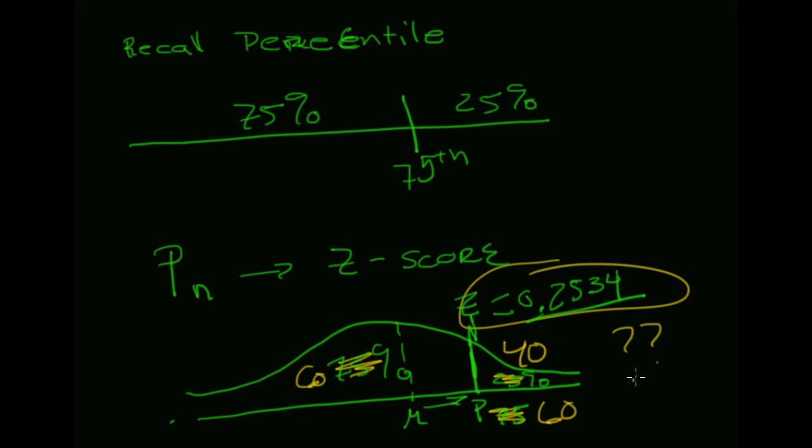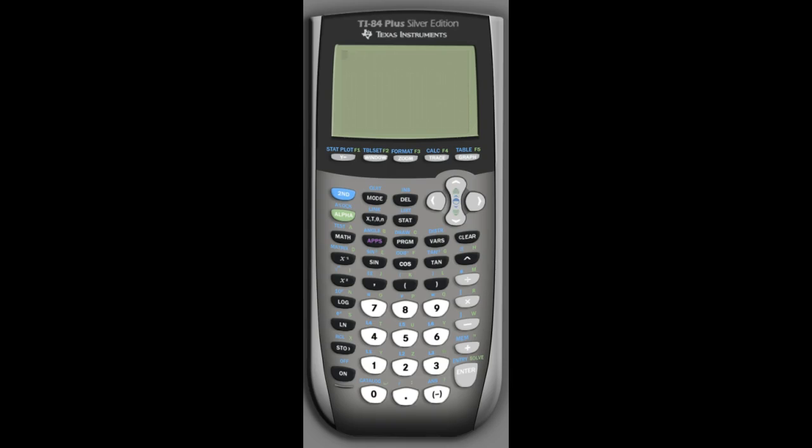So my argument is that that's supposed to happen at the z-score 0.2534. All right, so how can I verify that? Well, to do that I can break out my calculator. And remember that z-scores are a standard normal distribution. So I go second VARs, bring up the distributions, the normal CDF.